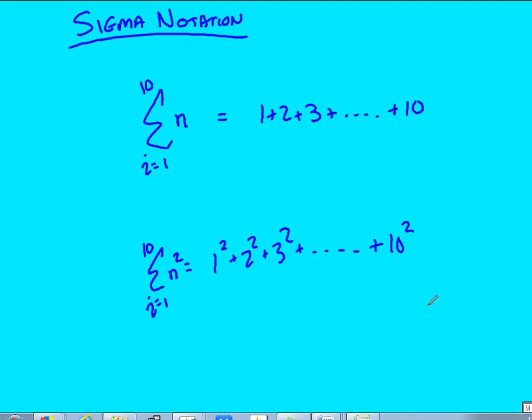Sigma notation: this is just a basic example. If you have this Greek letter Sigma, it's saying that from all numbers from 1 to 10, I want to just take the numbers and add them up, or in this case, take the squares and add them up. It's a way of shorthand writing rather than having to write out all these various numbers.